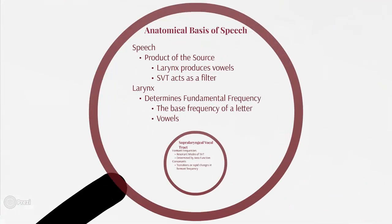The anatomical basis of speech: speech is a product of the source — the larynx produces the vowels: A, E, I, O, and U. The SVT acts as a filter and creates further variation in the frequencies. The larynx determines the fundamental frequency — the very base frequency. When you strip out all the changes the SVT can make, that's the base frequency, and those base fundamental frequencies correspond to the vowels.